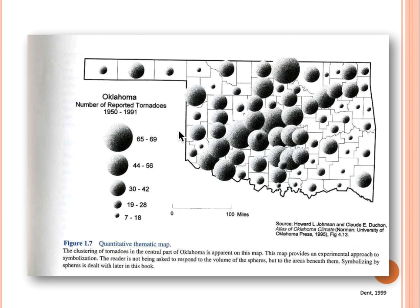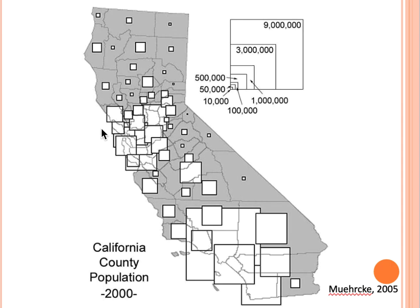Here is another proportional symbol map showing California county population in 2000. A large box represents 9 million population whereas a small box represents 10,000. Northern California has a lower population count compared to southern California. In central California and the Bay Area, boxes are overlaid upon one another, making it difficult to get a good visual representation of the population in that area.